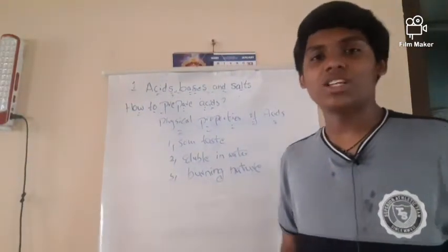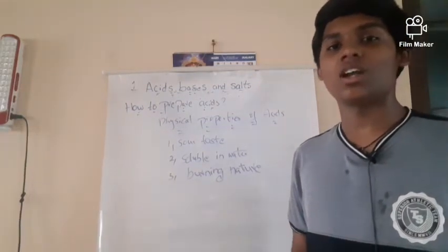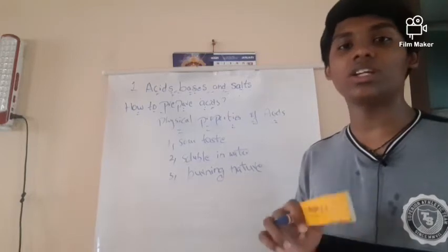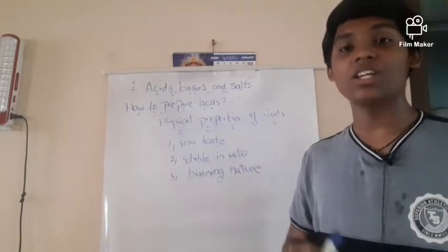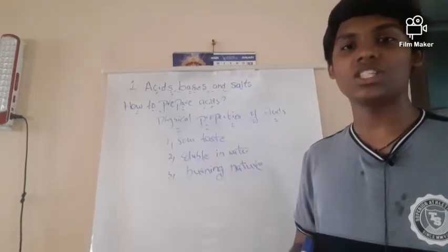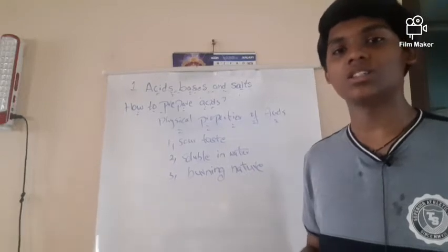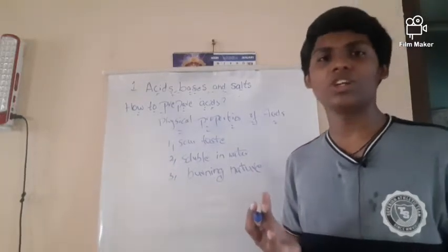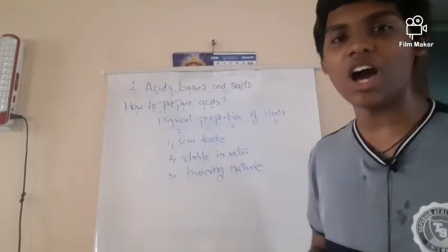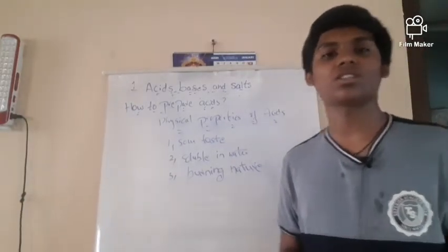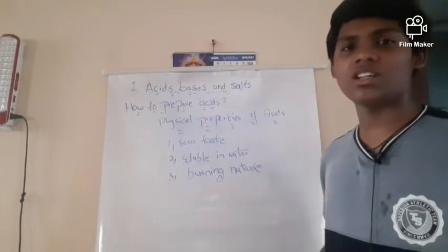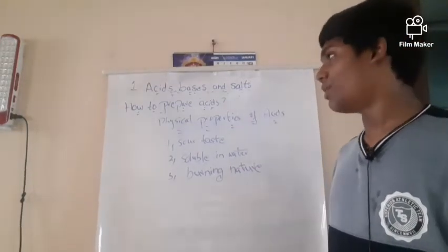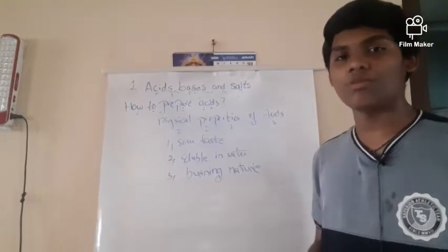Now, how do we conclude that a substance is an acid? We use indicators — these indicate whether something is an acid or a base. Some simple tricks for this: blue litmus paper, red litmus paper. We learned about acids and bases with these in seventh class. These are basics but will be useful in the main chapter.